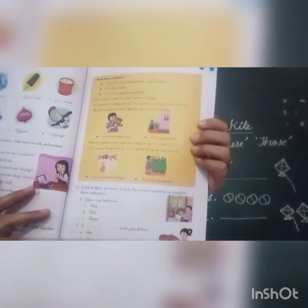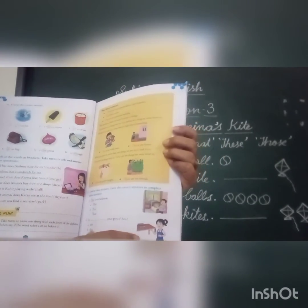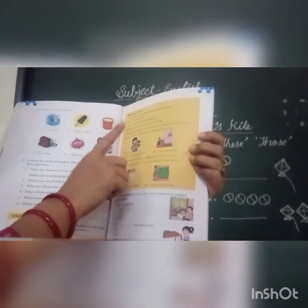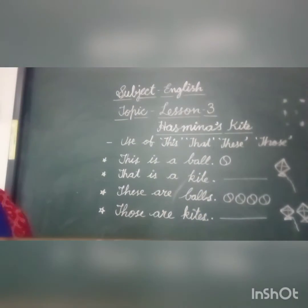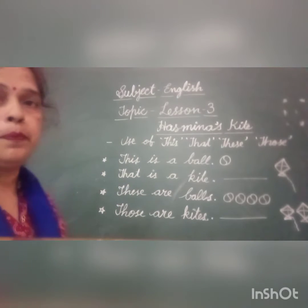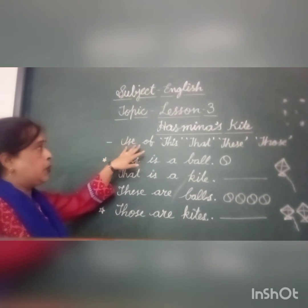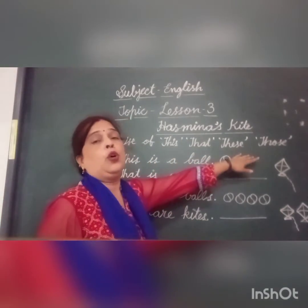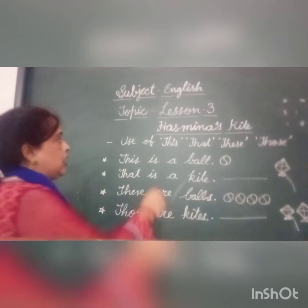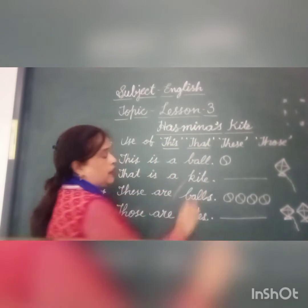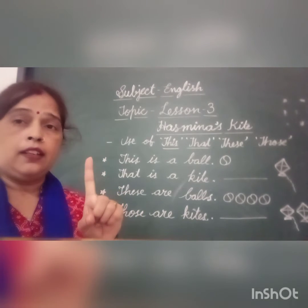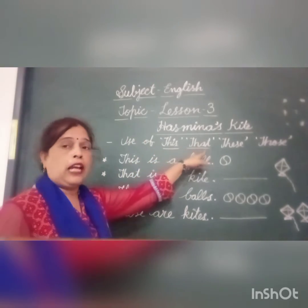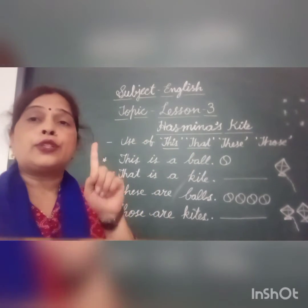In this exercise we will learn how to use this, that, these and those. Fine students, look at the blackboard. Today I am going to tell you the use of this, that, these and those. This and that is used only for singular nouns — means only for one object.